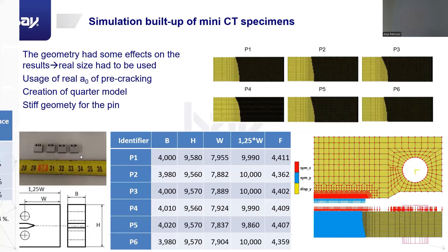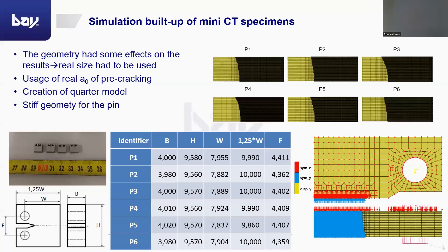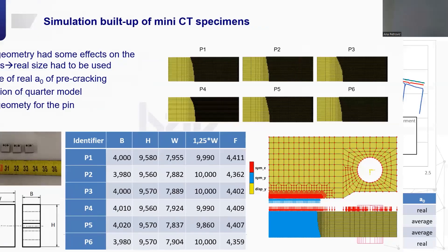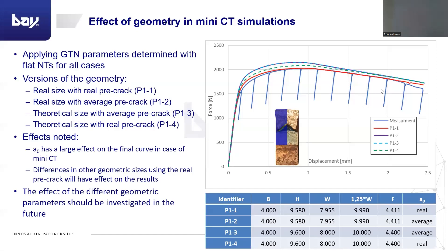Altogether, six specimens were done. We made 3D simulations to also check that the GTN parameters are well usable for the mini-CT specimens. Here, the real geometry and pre-crack were used, and the same boundary conditions were applied for the specimen. A quarter of the specimen was simulated — so there were two symmetry cases — and the displacement was applied on the pin. We needed to use the real geometry sizes, as I will explain.